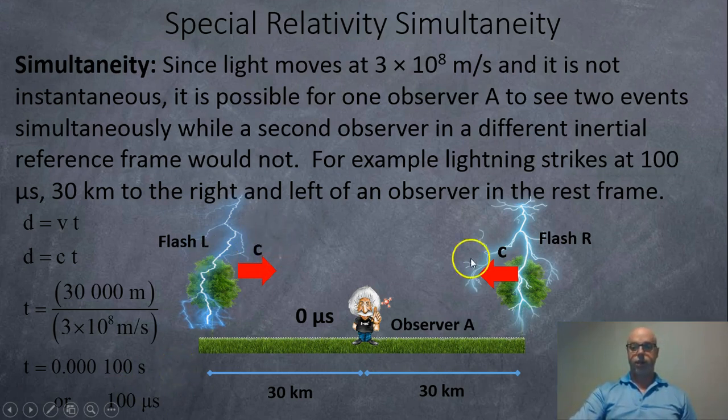So these two flashes, flash L and flash R, will arrive at this person in the middle at the exact same time, and they'll say, hey, those two lightning blasts or strikes were simultaneous.